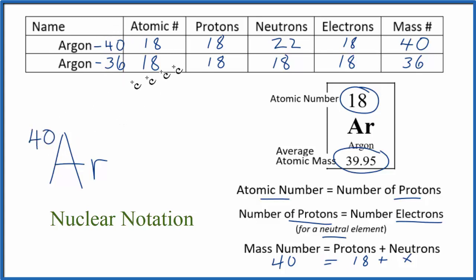So this is argon-40, and you could write the notation for argon-36 - it would be 18 because argon always has an atomic number of 18. This is nuclear notation - it's for specific isotopes.